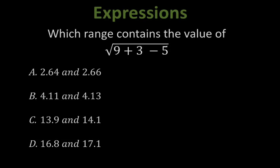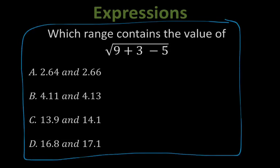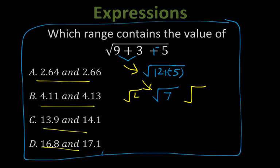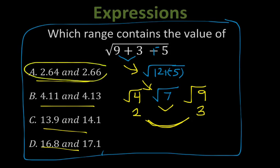Which range contains the value of this radical? Copy the whole thing down — it's very similar to a question on the quiz. Our first step is to simplify inside the radical: 9 plus 3 plus negative 5. Add 9 plus 3 to get 12, then 12 plus negative 5 becomes 7. Square root of 7 — the perfect square below is 4 and above is 9, so the square root of 7 is between 2 and 3. The only option between 2 and 3 is A. Do not overcomplicate this problem.